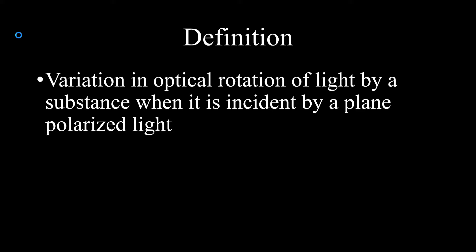We will discuss Optical Rotatory Dispersion of light. First, we will discuss the principle and definition. We will discuss the variation in optical rotation of light by a substance when it is incident by plane polarized light. We will discuss the optical activity of the sample and how the effect will be measured. The sample will turn the plane polarized light clockwise or anti-clockwise — this variation is called Optical Rotatory Dispersion.